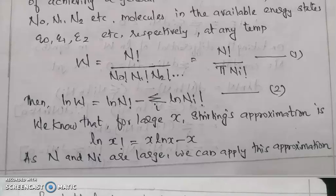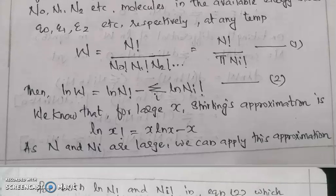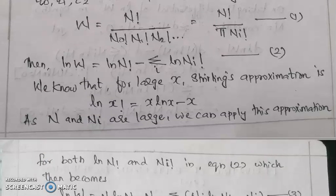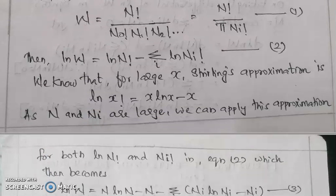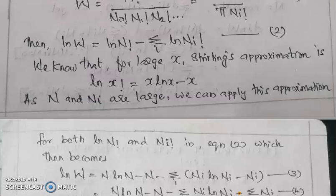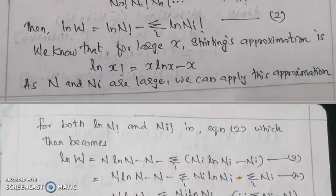We know that for large x, the Stirling approximation is: ln(x!) equals x ln x minus x. We can apply this approximation for both ln N and ln Ni factorial in equation 2.